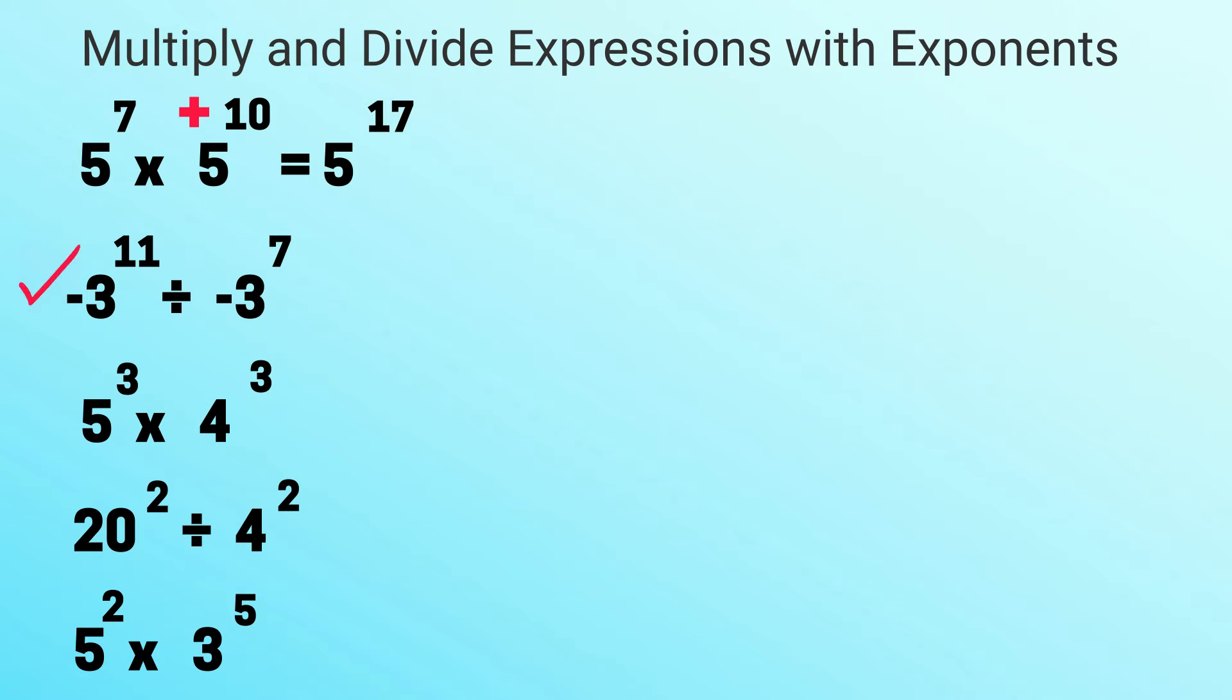This next example you have the same basis and you're dividing. So what you do is you keep the same base of negative 3, and in this example since it's division you will subtract the exponents. 11 minus 7 equals 4, so it will be negative 3 raised to the fourth power.